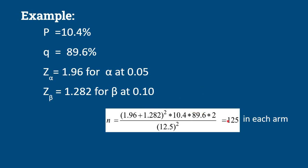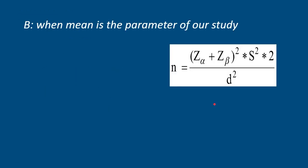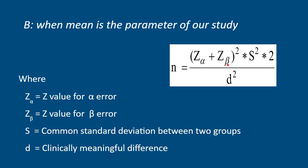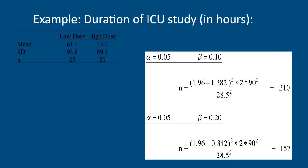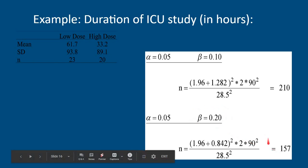When mean is the parameter, the formula is N = (Z_alpha + Z_beta)² × SD² × 2 / D², where S is the standard deviation between the two groups and D is the clinically meaningful difference. In the example, mean duration of ICU in hours for low dose is 61.7 and high dose is 33.2, with given standard deviation, alpha at 0.05 and beta at 0.10. Substituting the formula yields N = 210. If beta error is kept at 0.20, then the required sample size is 157.